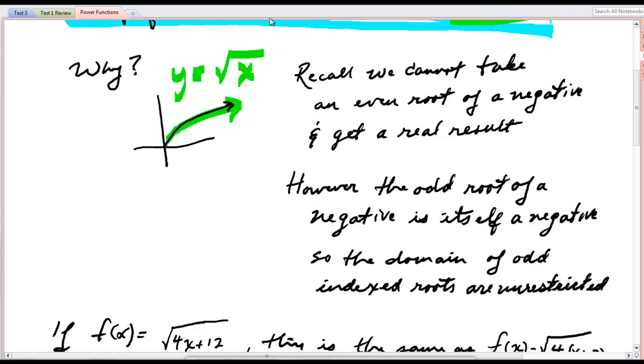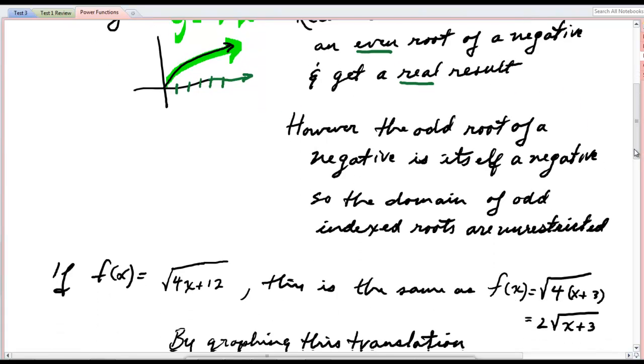Remember, the implicit index up here is 2, right? But it was not an even function because it was only defined for non-negative values of x, so 0 to infinity. So whenever we have an even indexed root, we can't plug in a negative and get a real result. When we plug in a negative, we get imaginary results.